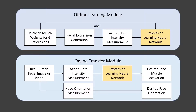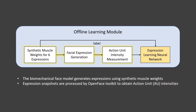Next, we will explain our facial expression and head pose controller in greater detail. The controller consists of two parts: an offline learning module for learning expression representation at the top, and an online expression and pose transfer module at the bottom. Specifically, we leverage the facial action coding system as an intermediate representation of the expression space in this controller to better transfer facial expressions onto the biomechanical face model.